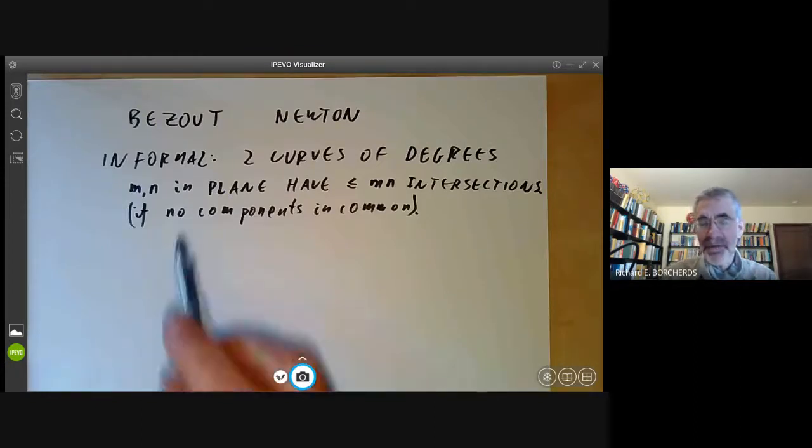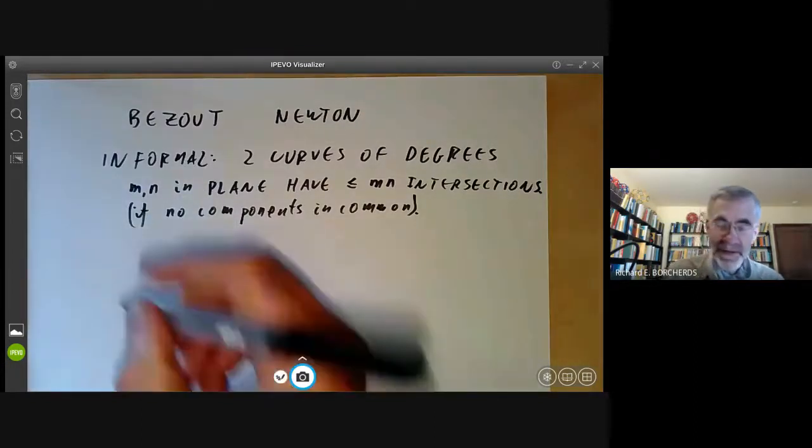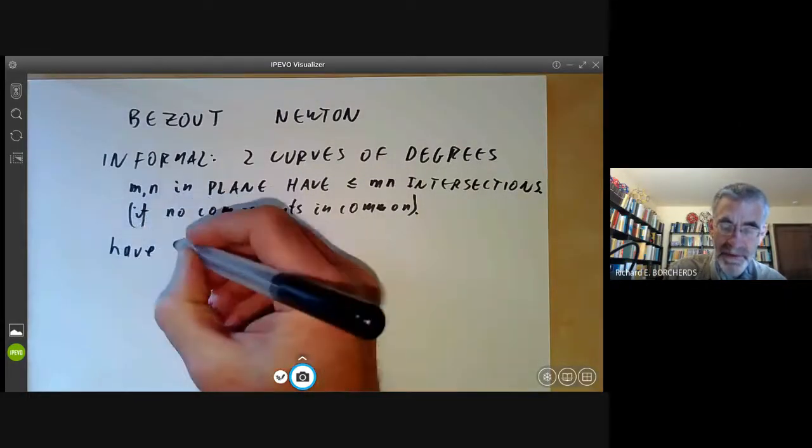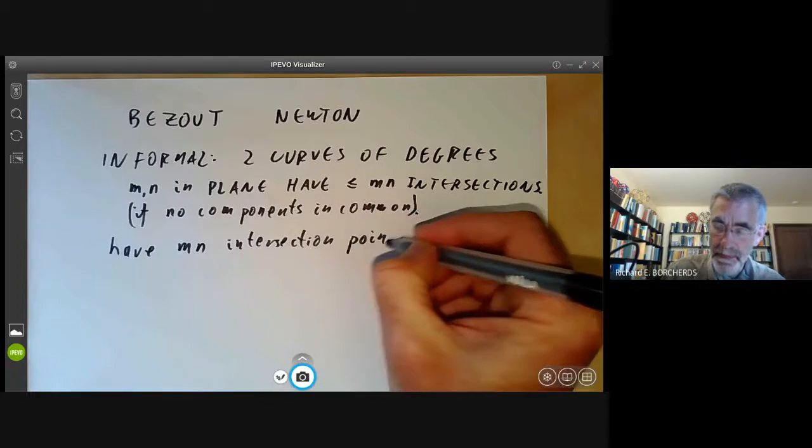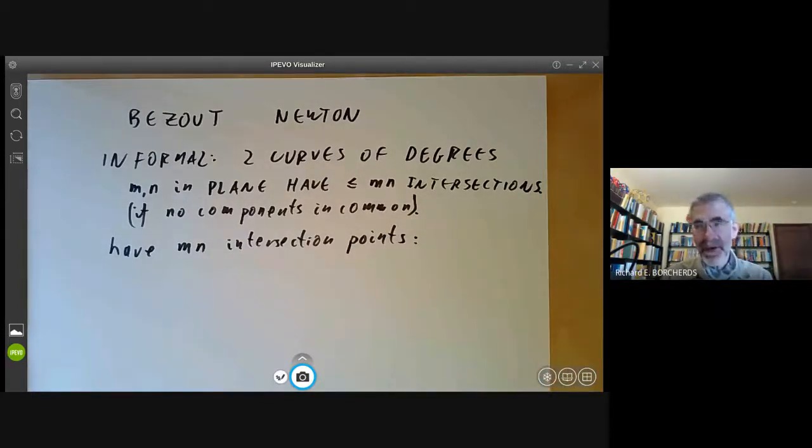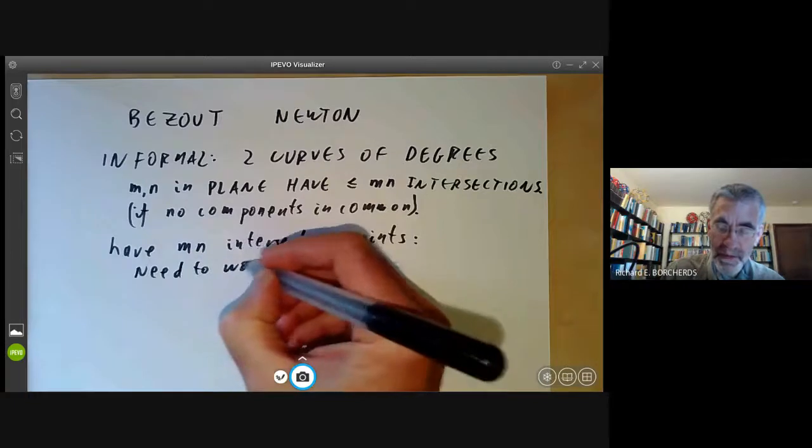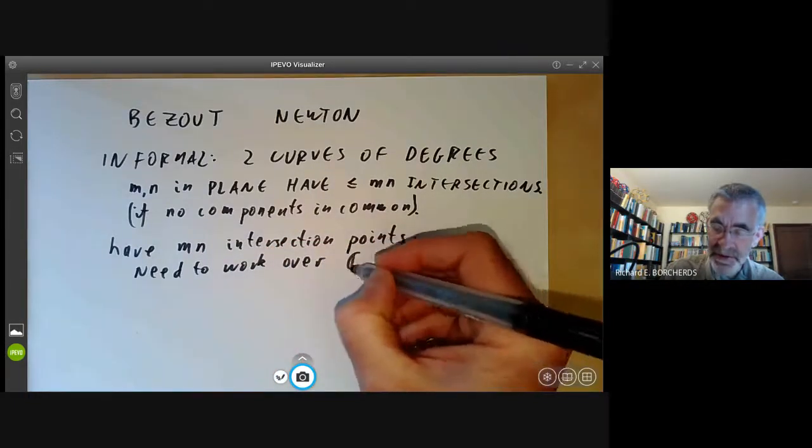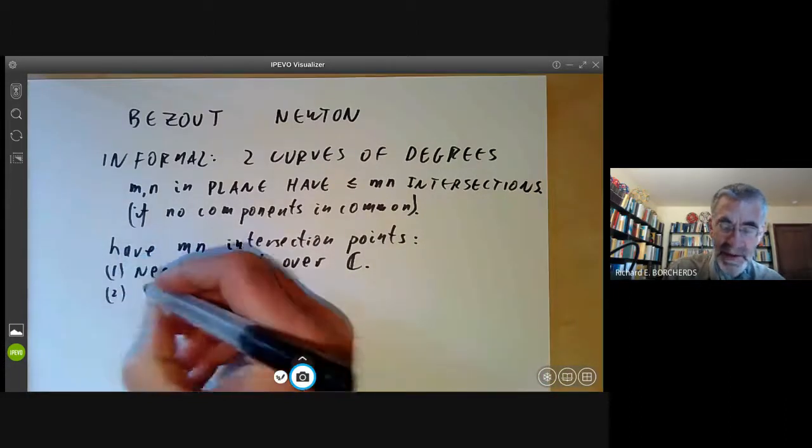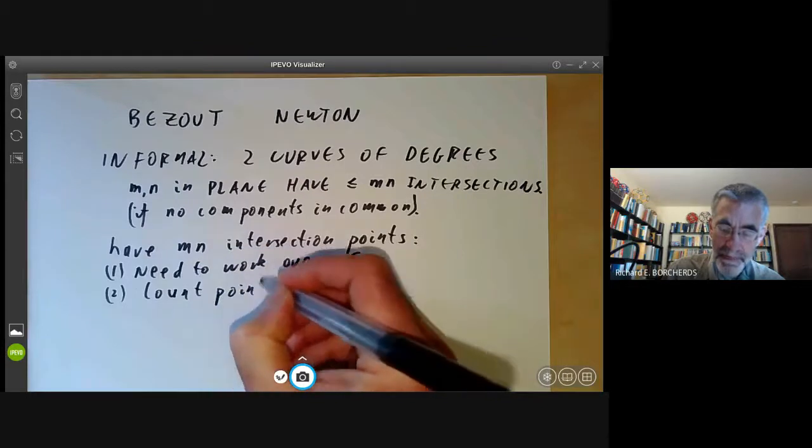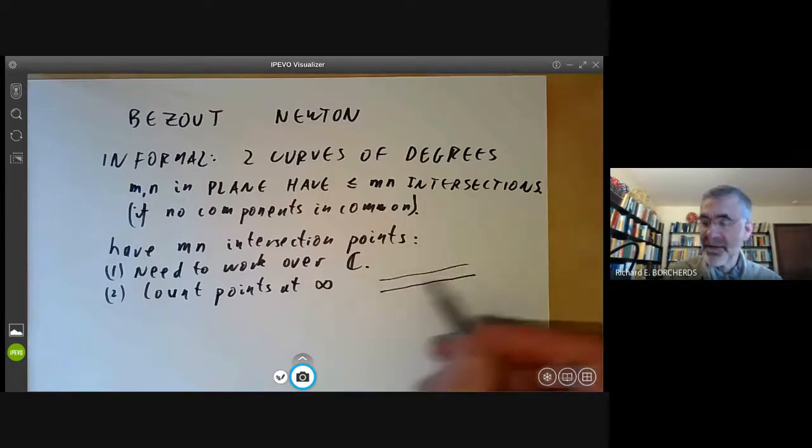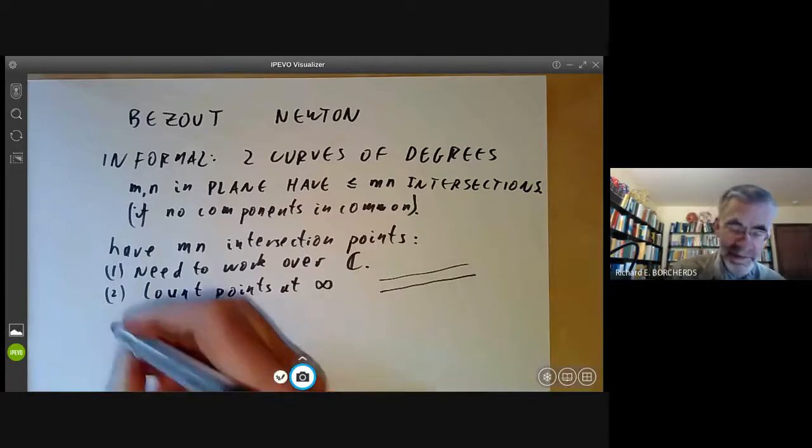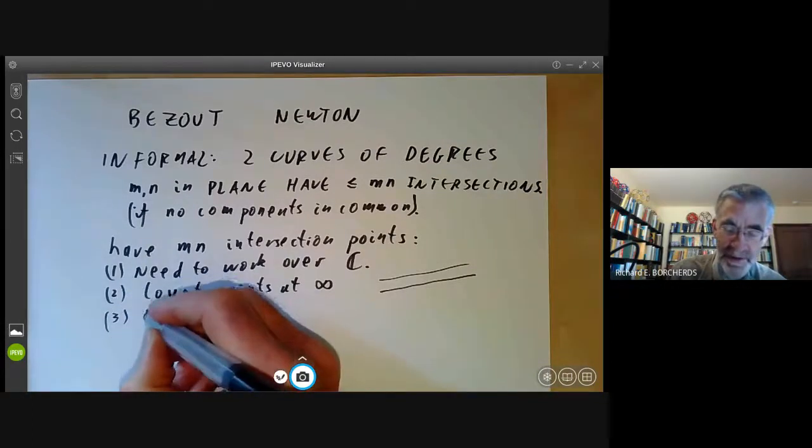Well, there's a slightly stronger version of Bezout's theorem that says the number of intersection points should be exactly mn. Except to get the number exactly equal to mn, we need to work over an algebraically closed field such as the complex numbers. Secondly, we must somehow count points at infinity because we might have, say, two parallel lines of degree one that don't meet anywhere on the plane, but they sort of meet at infinity in some sense.